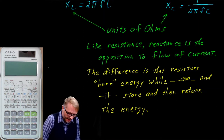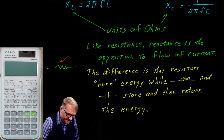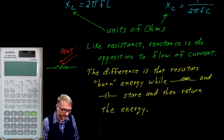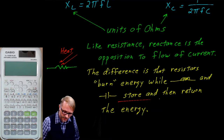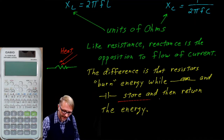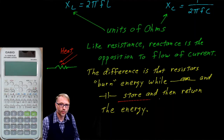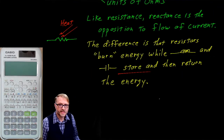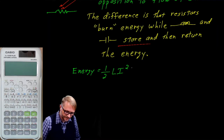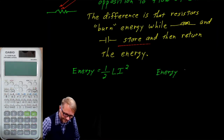To say a resistor burns energy means it has a current flow and is giving off energy in the form of heat — once given off, it cannot be returned. Whereas in an AC circuit, the capacitor and inductor store energy; that energy sloshes back and forth between the generator and the reactive element. The energy stored in an inductor is ½LI², and for a capacitor it is ½CV².